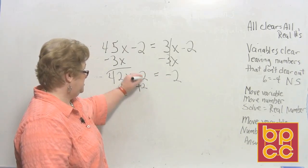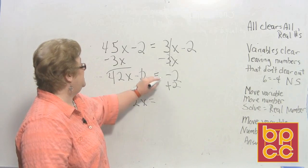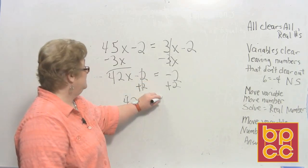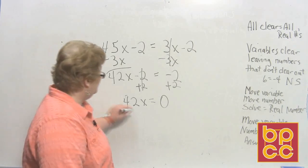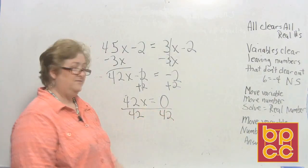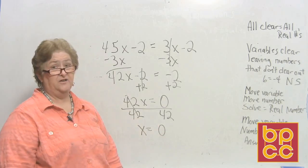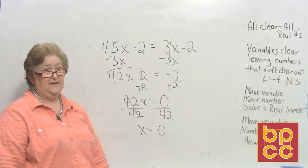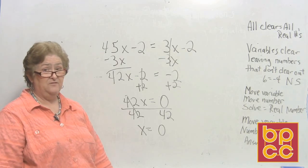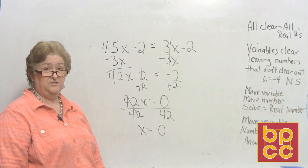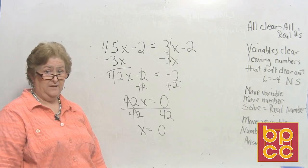Adding 2 to both sides: positive 2 and negative 2 give zero, so 42x = 0. If 42 people are getting nothing for lunch and we divide by 42, one person gets nothing too. So x = 0. When the variables stay but the numbers clear out, the answer is zero. I've taken you through all the different types of equations — just practice a little more and you'll do fine.